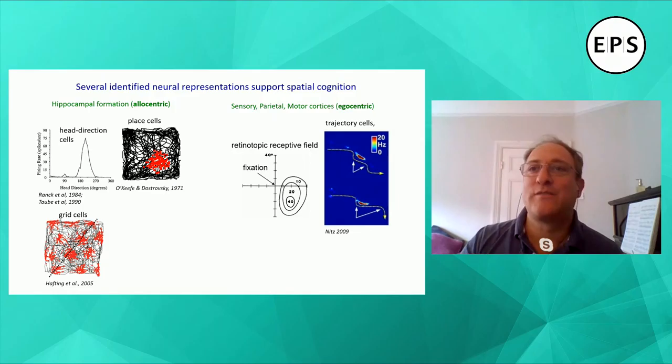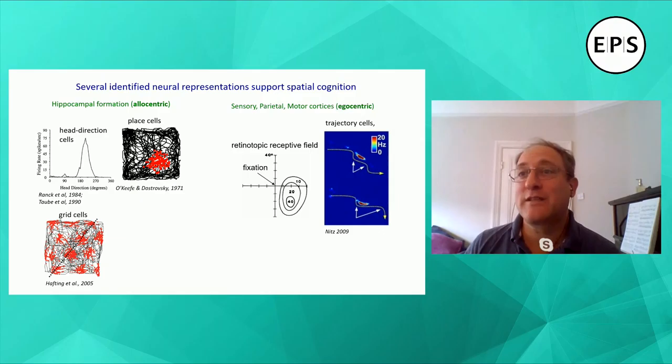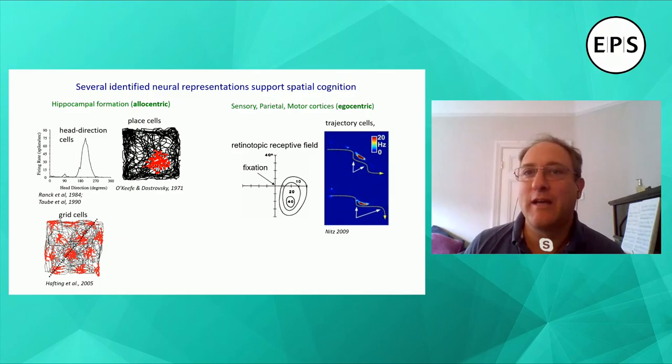These are allocentric representations. And there are also lots of different kinds of egocentric representations in sensory systems and motor systems, tuned to respond to the egocentric location of a stimulus — for example, in the visual system — or tuned to egocentric movements such as trajectory cells in the parietal cortex or striatum that fire whenever the animal is making a left turn as part of a trajectory.